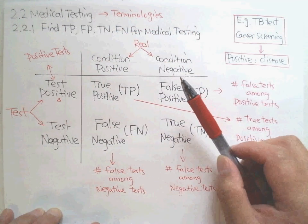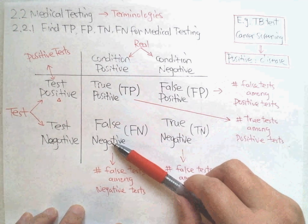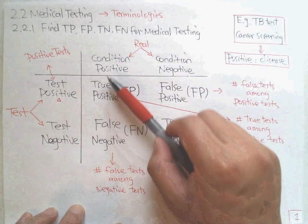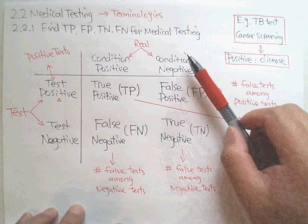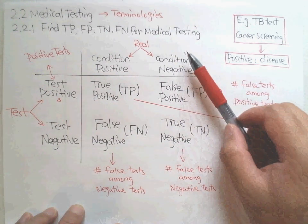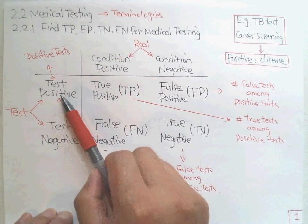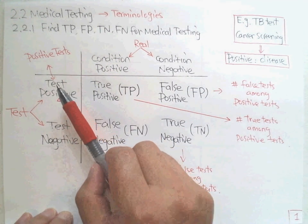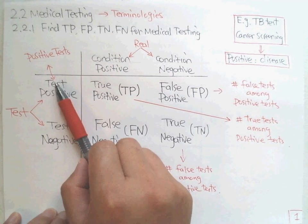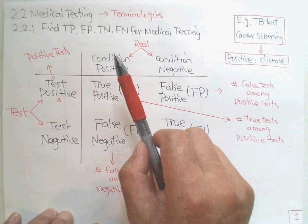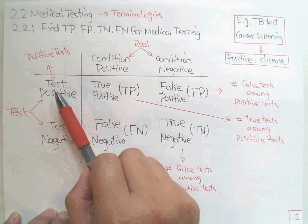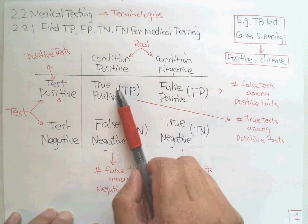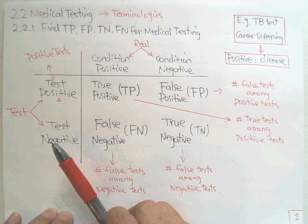In the contingency table, the first column is condition positive — it means the real positive, the real disease. The second column is condition negative — it means healthy, no disease. The first row is test positive, meaning positive test results. Test positive does not necessarily mean the patient really has the disease, because the test result could be wrong — it could be false or true. The second row is test negative, meaning negative test results.